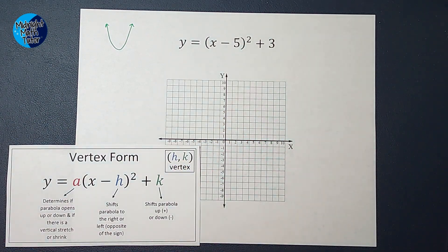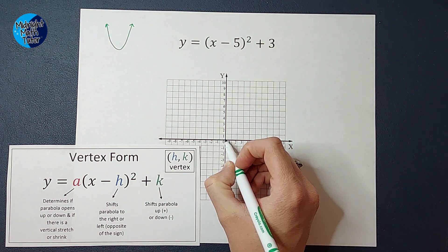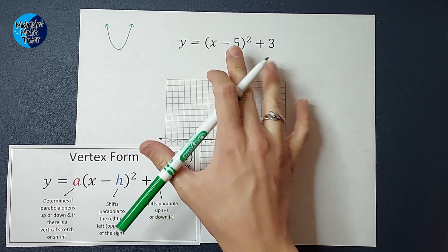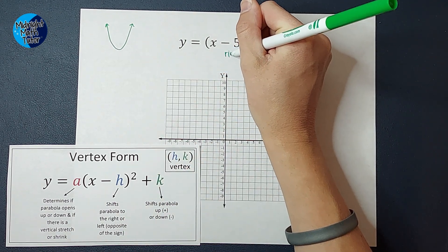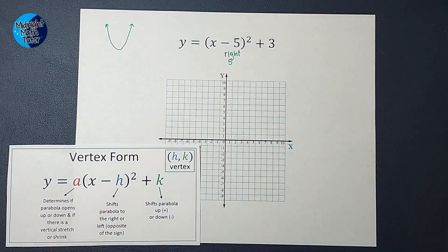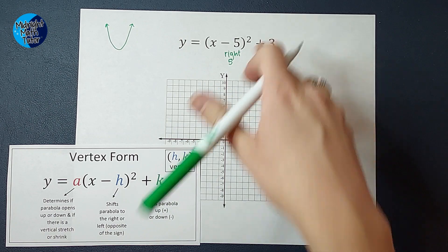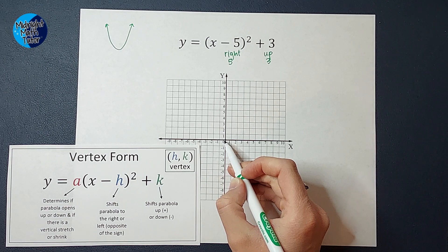So my parent graph starts at 0, 0, right? But this one, we have this negative five. We go opposite of the sign, so that means my graph is going to shift to the right five. This plus three means my graph is going to shift up three.